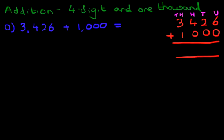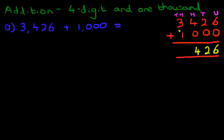What is six plus zero? That's nice and easy — it's six. The tens column: two plus zero, that will be two. Now we're on to the hundreds column: four plus zero is four. And lastly we've got the thousands column, where we simply add the three and the one. That gives us four. And we have our answer: four thousand four hundred and twenty-six.